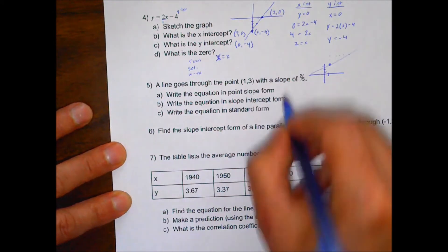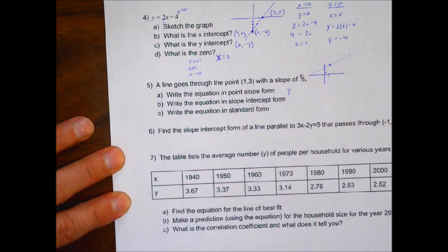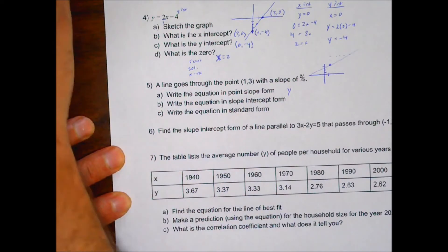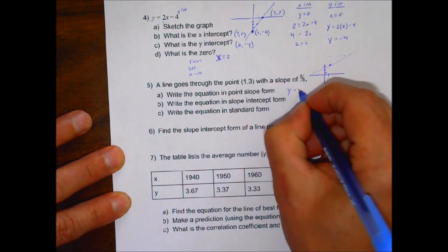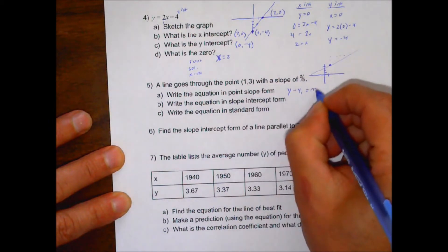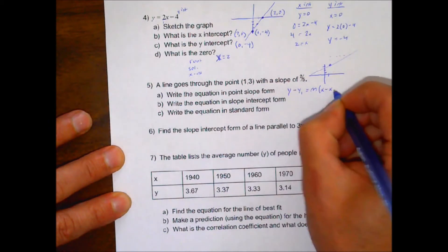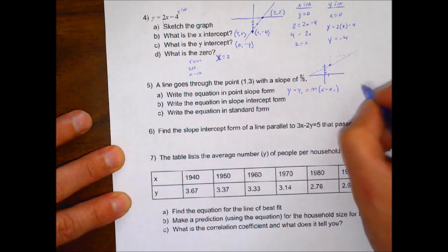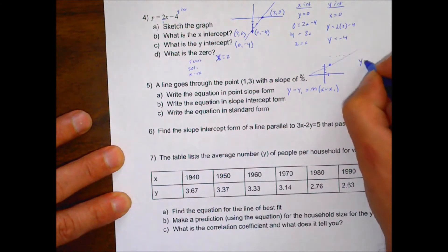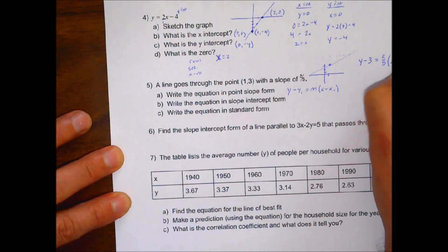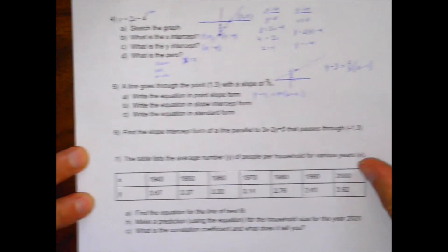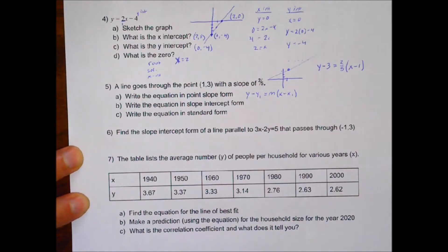So point-slope form is y minus y1 is equal to m times x minus x1. So if I plug these in here, I would have y minus the 3 is equal to 2 fifths times x minus our x, which is 1. And right there is our point-slope form. You're done. So there is your point-slope form.